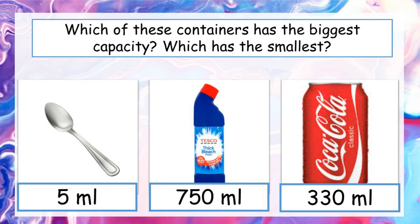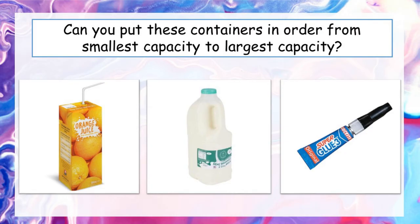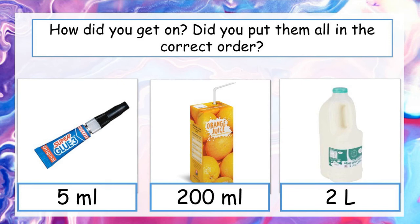Same idea — put these containers in order from the smallest capacity to the largest. We have an orange juice drinking container for one person, a big carton of milk, and a superglue container. Pause the video and put them in order. Our smallest container is the superglue container — only 5 millilitres. Our second container is the juice carton for one person, the same size as the milk cartons you get in school — 200 millilitres. And finally, the large carton of milk is 2 litres, making it our largest capacity.